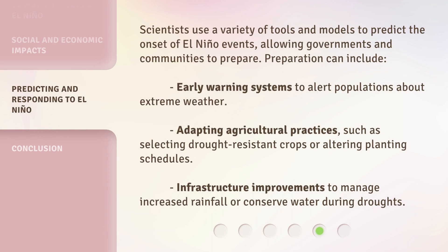Scientists use a variety of tools and models to predict the onset of El Niño events, allowing governments and communities to prepare. Preparation can include early warning systems to alert populations about extreme weather, adapting agricultural practices such as selecting drought-resistant crops or altering planting schedules, and infrastructure improvements to manage increased rainfall or conserve water during droughts.